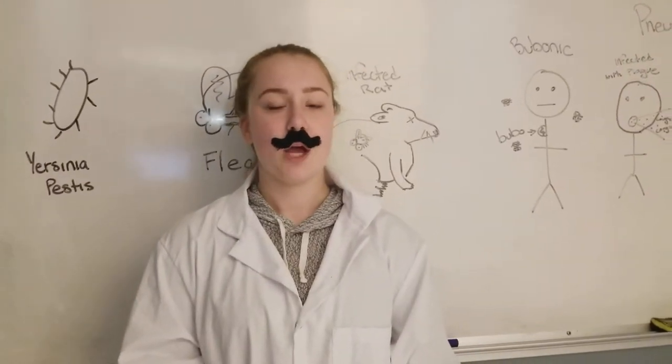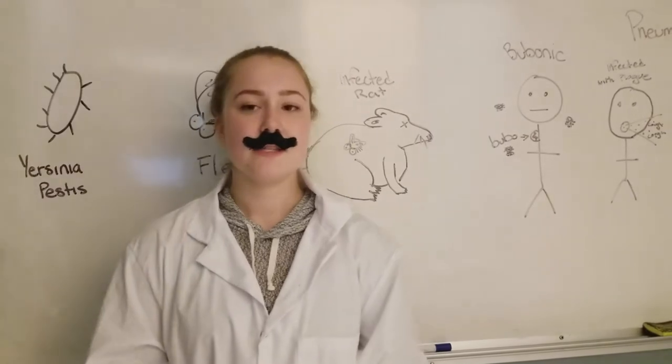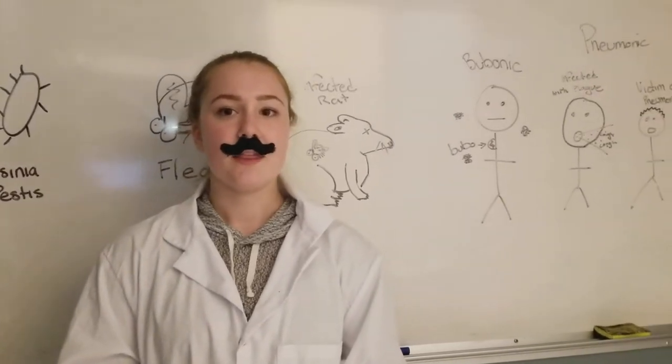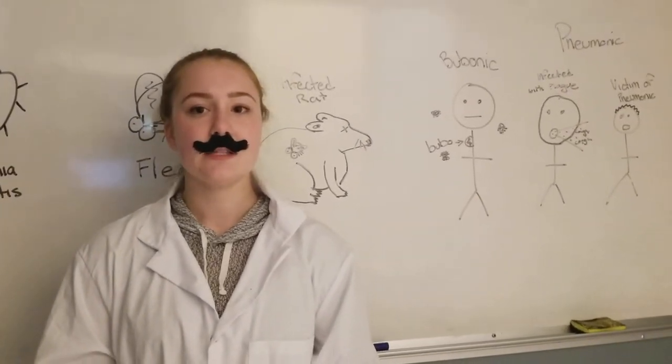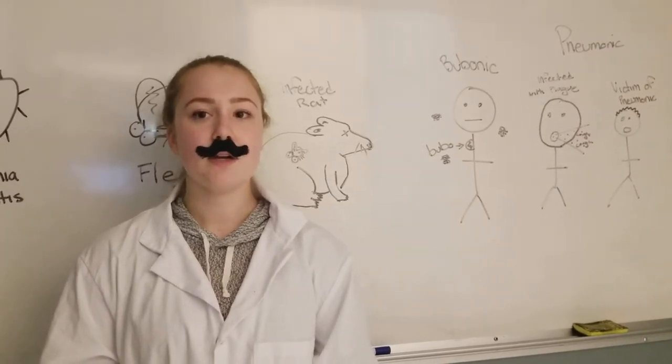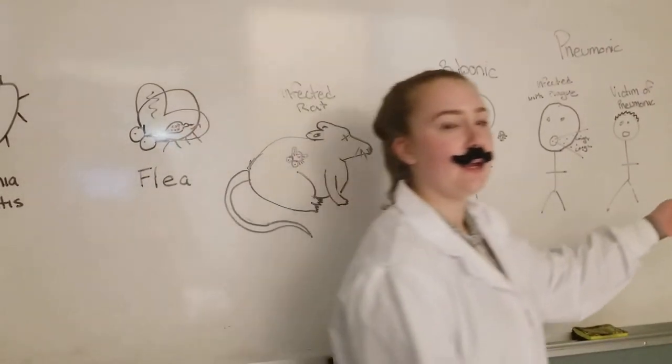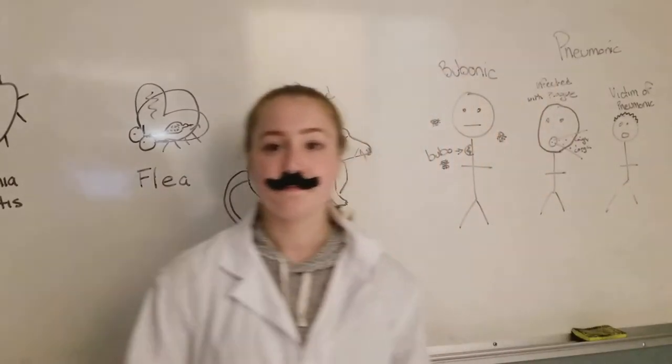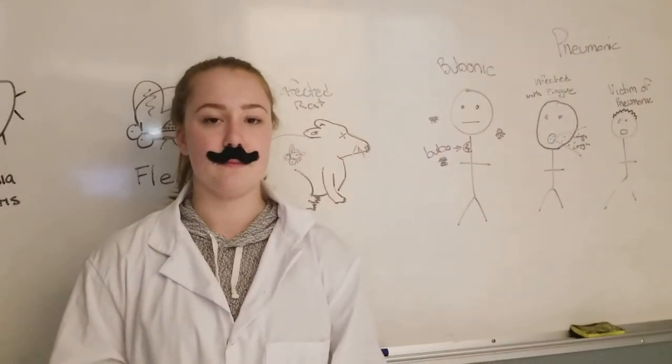Now let me explain pneumonic plague. Yersinia pestis enters the lungs through direct inhalation. That is what is called primary pneumonic plague. A person will acquire it naturally by inhaling respiratory droplets from infected humans or animals such as a cat.